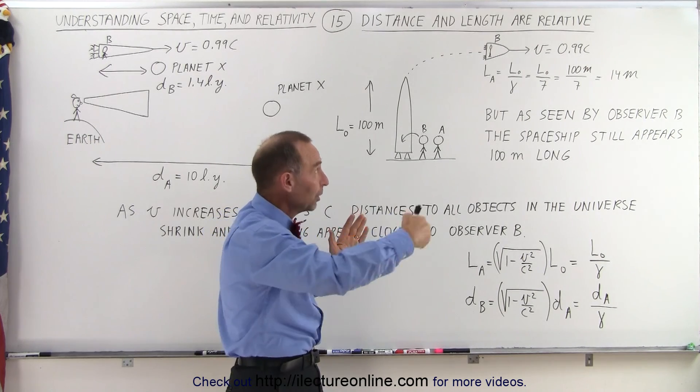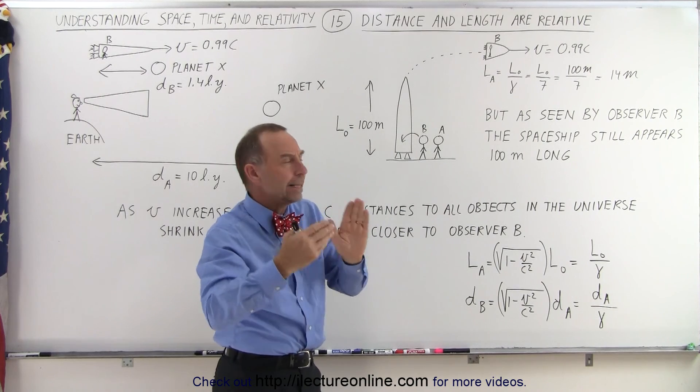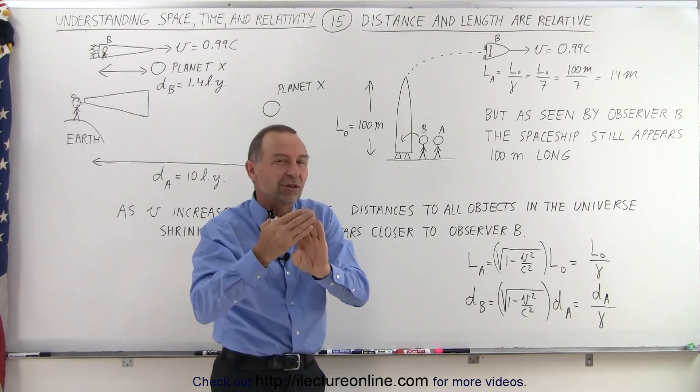If the spaceship were to continue to speed up even faster, the spaceship would continue to shrink. And in the end, if the spaceship were able to reach the speed of light, the spaceship would appear to have zero length.